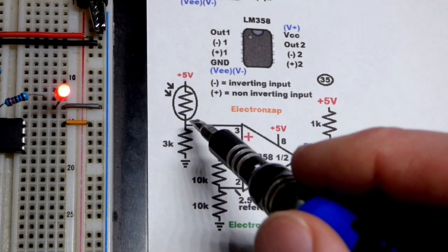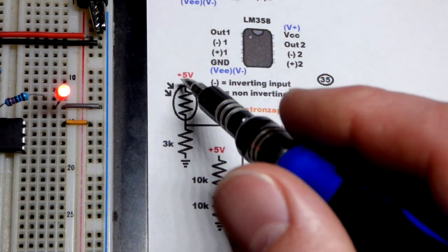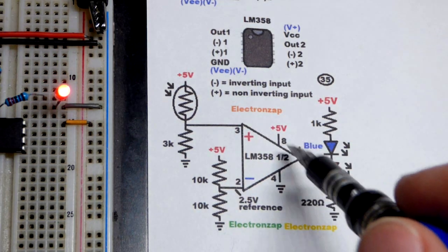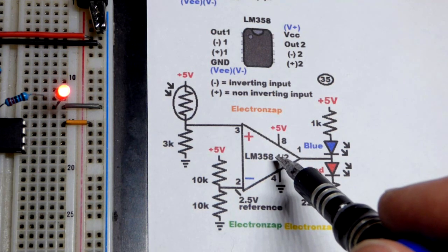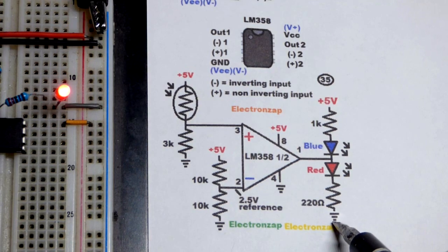When light's falling on the light-dependent resistor, enough light that it drops below 3,000 ohms of resistance, it will raise the voltage above 2.5 volts, and we will have a high output. It will be not 5 volts because we've got a couple diodes that drop about a volt and a half, so probably 3.5 volts. It's a single supply op-amp. But the red LED will light up.